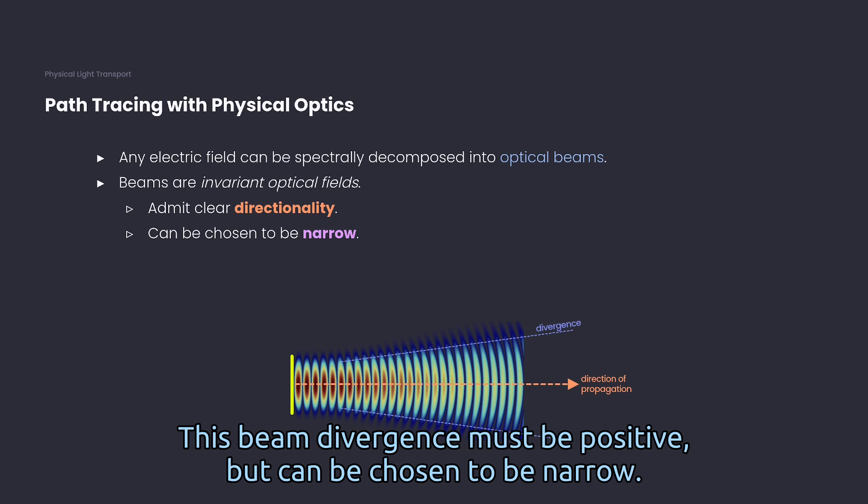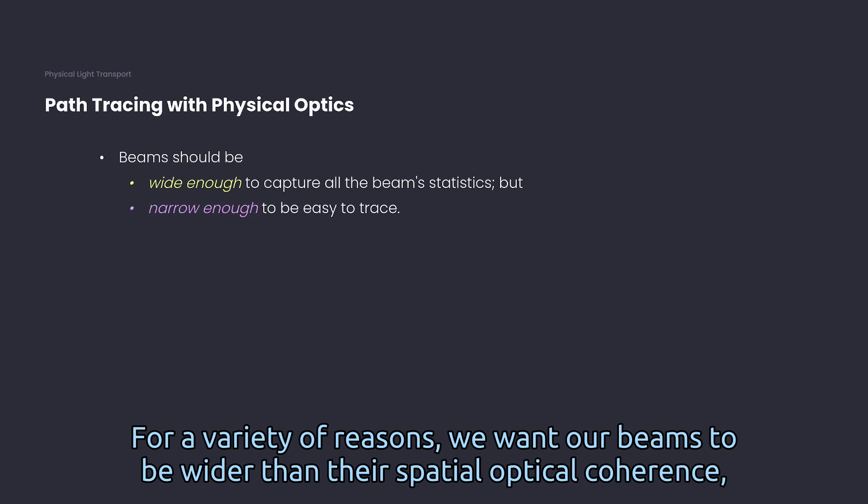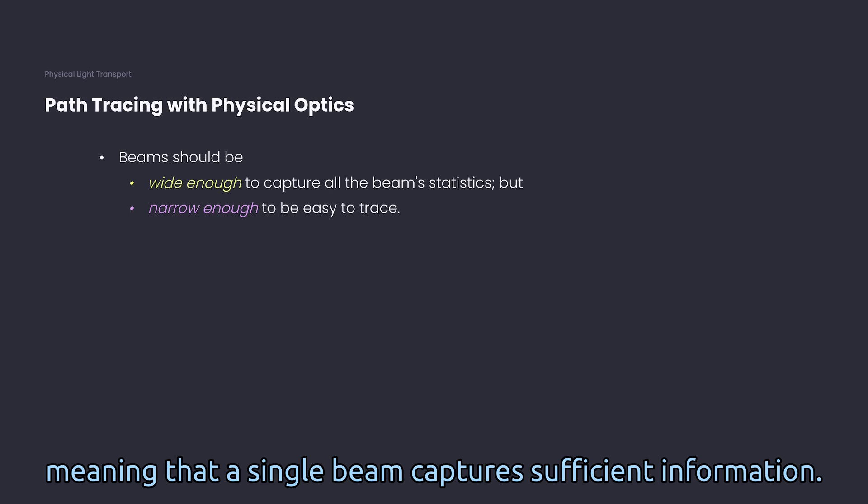This beam divergence must be positive but can be chosen to be narrow. For a variety of reasons, we want our beams to be wider than their spatial optical coherence, meaning that a single beam captures sufficient information.